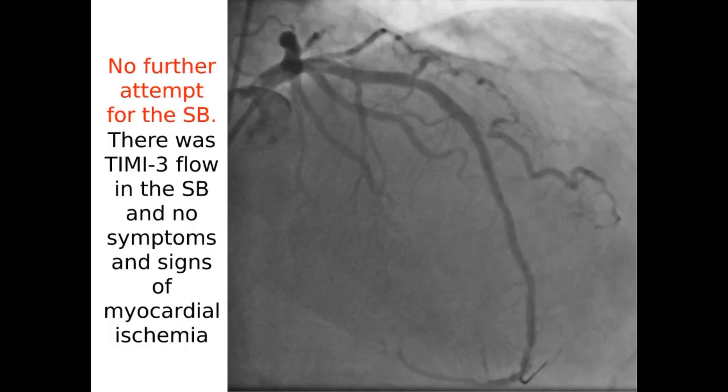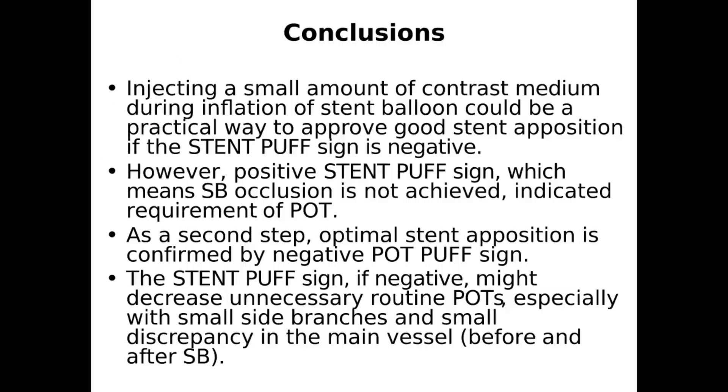Perfusion in the side branch persisted, which means a positive stent puff sign — indicating we need POT. We applied POT and perfusion in the side branch was blocked, confirming optimal stent apposition in the proximal segment.